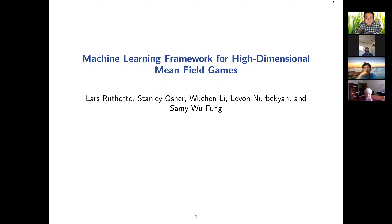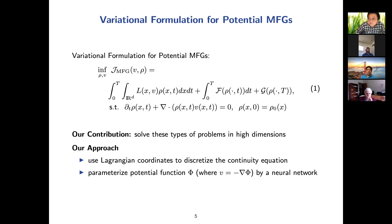This is joint work with the whole group: Laws, Toto, Wu Chen, Levon, and Sammy Wufeng. This is a machine learning framework for high-dimensional mean field games. This is the original problem — a variational formulation for potential mean field games. You minimize this Lagrangian L of rho, plus a running density term F of rho, plus boundary conditions enforced at capital T as G, such that the transport equation is satisfied: rho_t plus div(rho v) equals zero. Our contribution is to solve these problems in very high dimensions, including 100 dimensions.